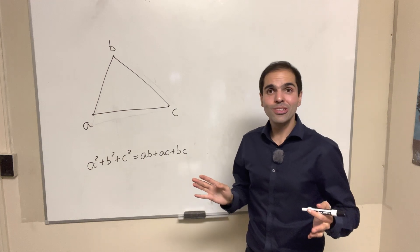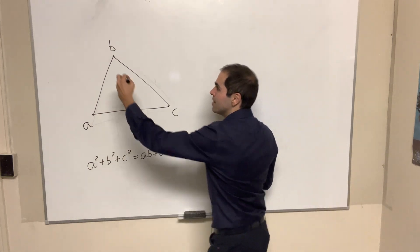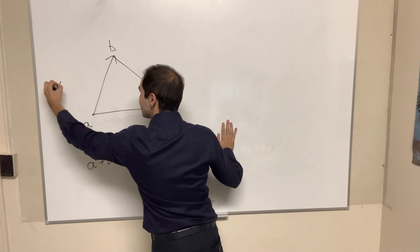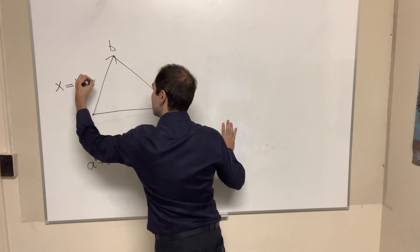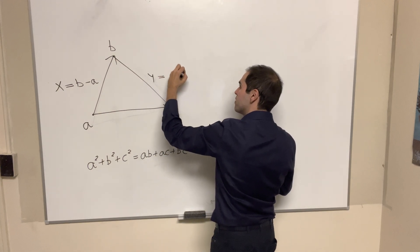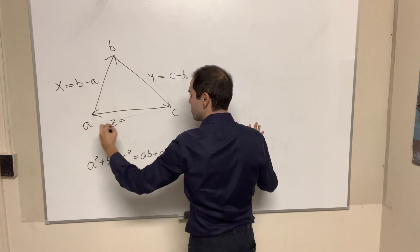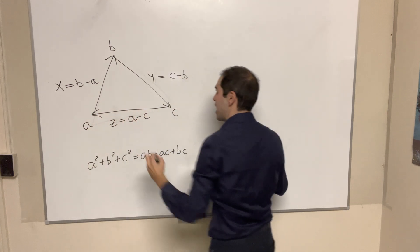The way we'll do this is by using some very neat complex numbers. So let x be the side from a to b, so x is b minus a. y is the side from b to c, so y is c minus b. And z be the side from c to a, so z is a minus c.